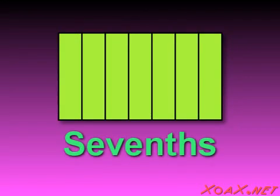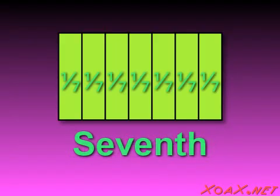We can divide this rectangle into seven equal strips like this, and we have divided the rectangle into sevenths. Since there are seven equal regions, each of these regions has an area that is one-seventh of the area of the original rectangle.